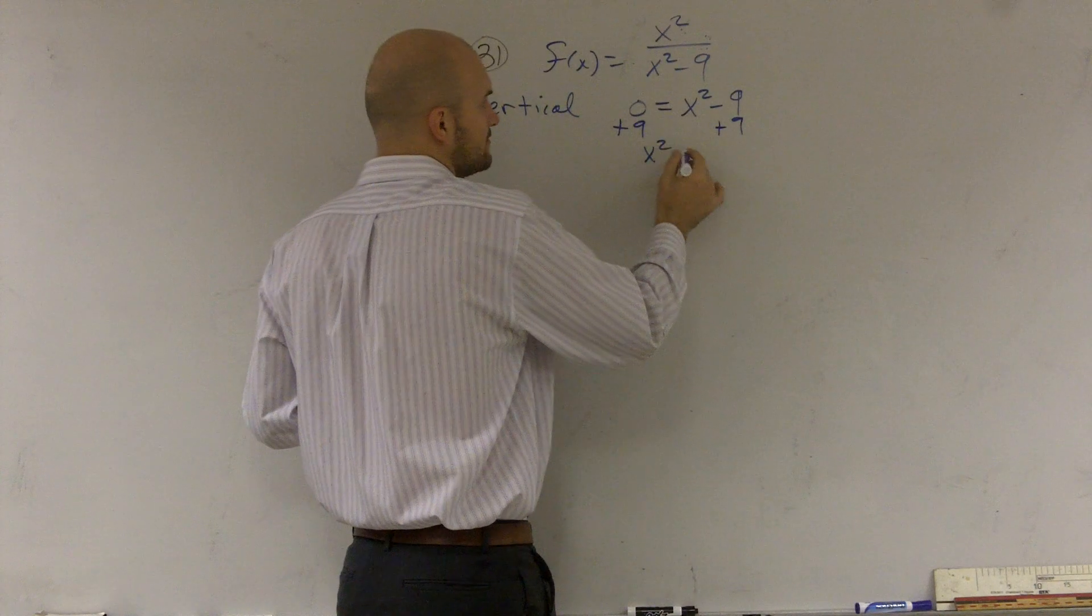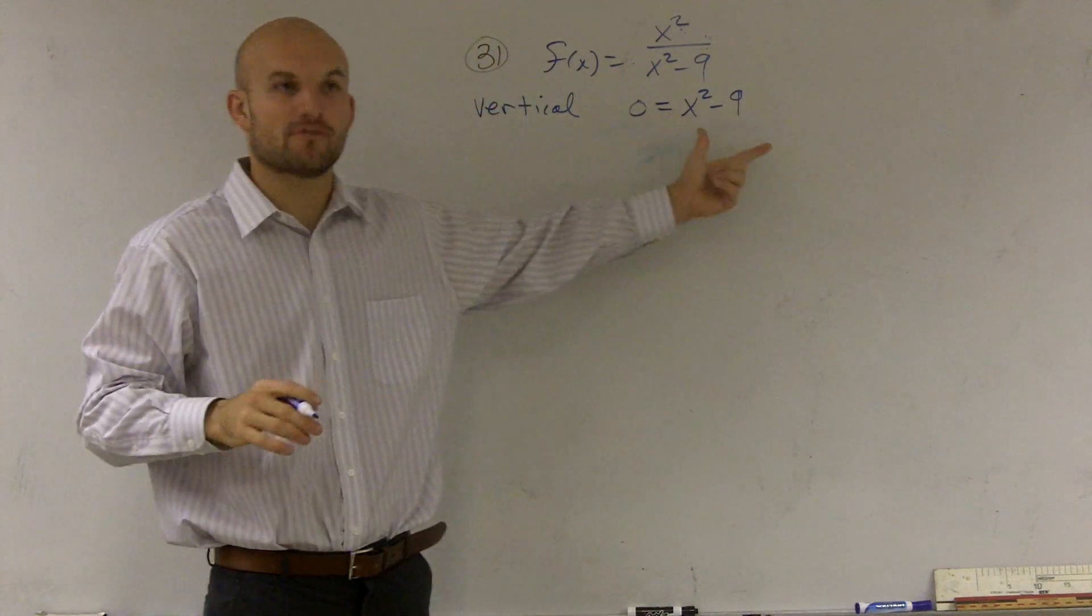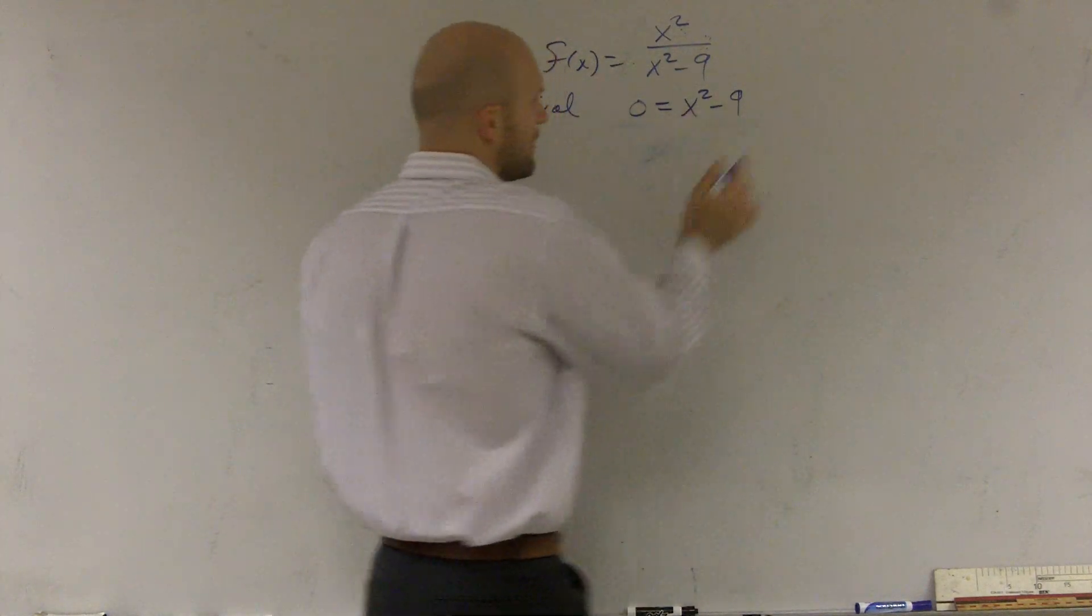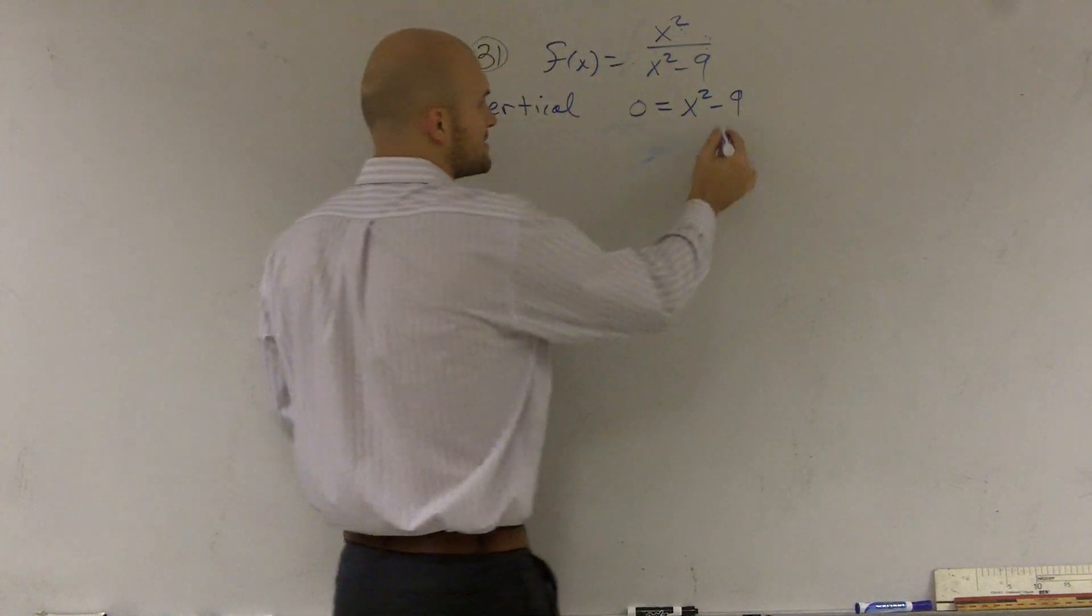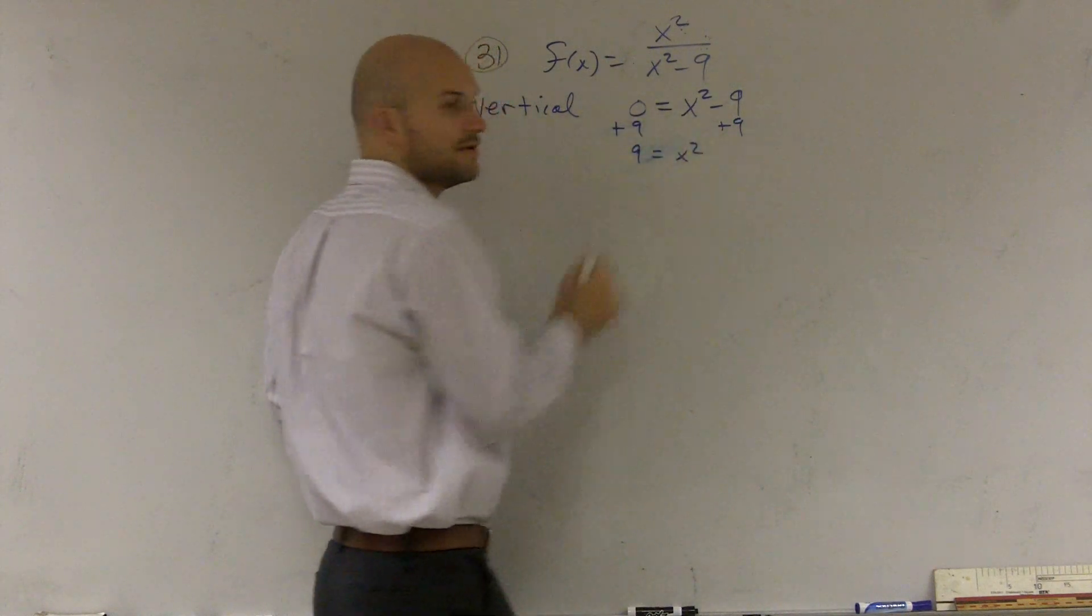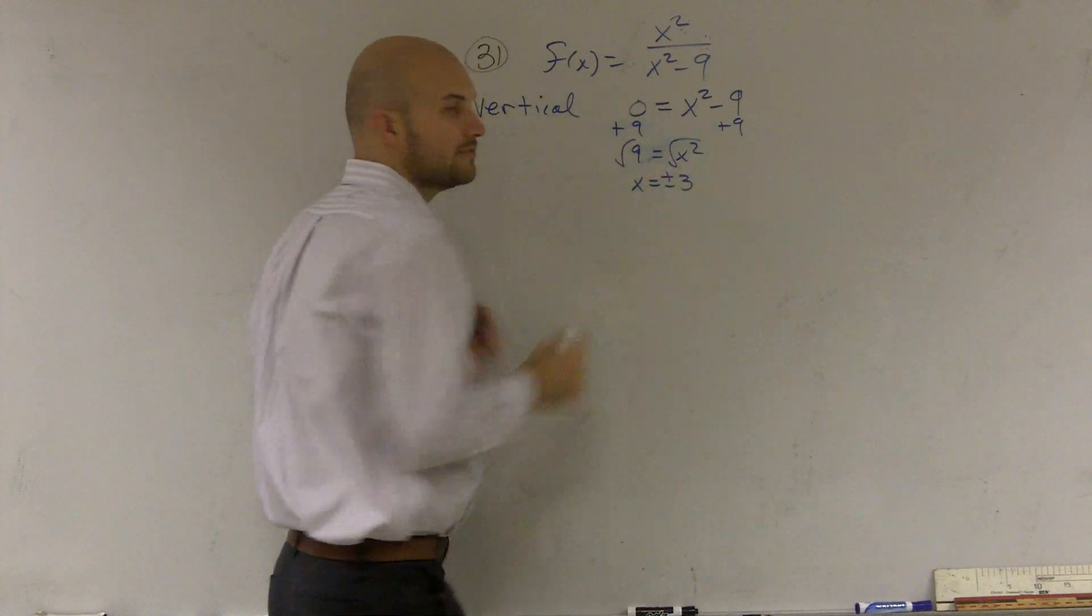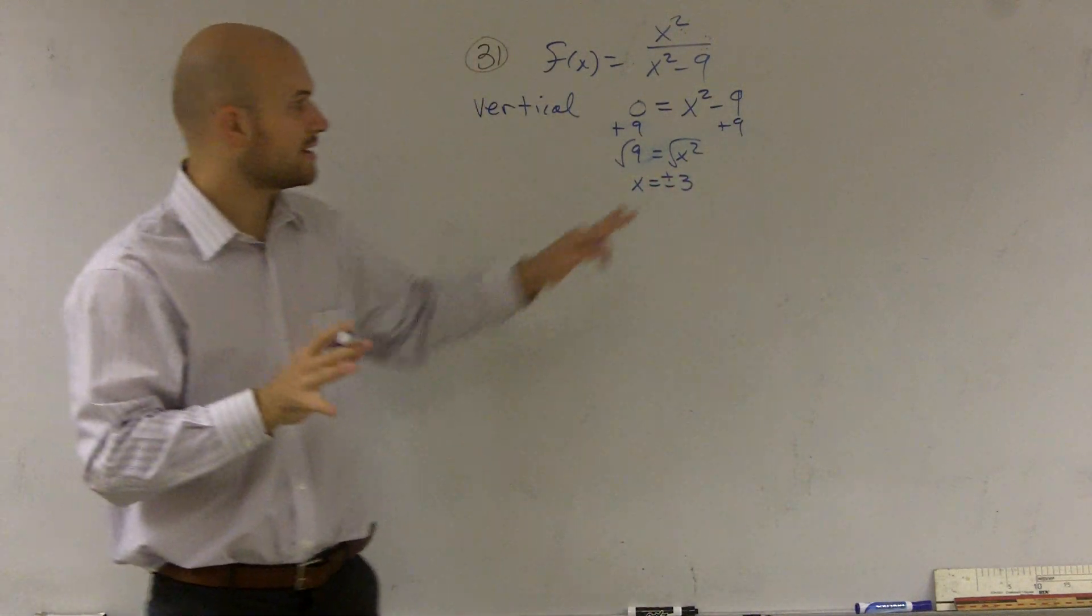So therefore, I'm going to say zero equals x squared minus nine. So what values make my bottom zero? I'll add nine to both sides. Actually, you know what, let me do this. One thing you guys could solve it, right? You could add the nine to both sides.